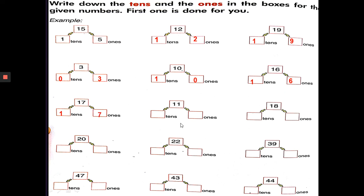Similarly, for the remaining numbers: 2 tens and 2 ones. The next number has 3 tens and 9 ones. Then 4 tens and 7 ones. Then 4 tens and 3 ones. The last number, 44, has 4 tens and 4 ones.